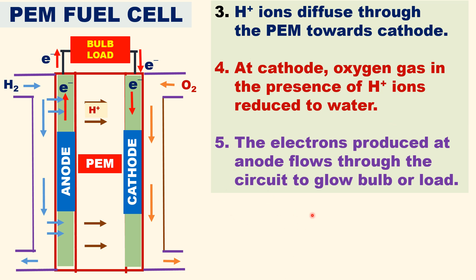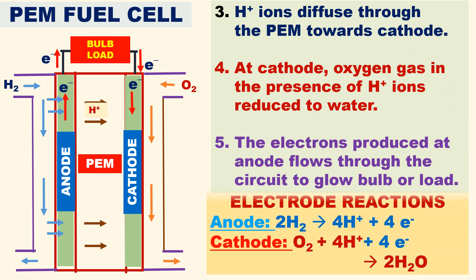Let us see the electrode reactions to understand this. At the anode: in the presence of the catalyst, hydrogen gas molecules are oxidized to give H⁺ ions and electrons. At the cathode: oxygen molecules are reduced to water in the presence of H⁺ ions.